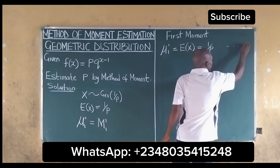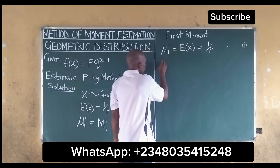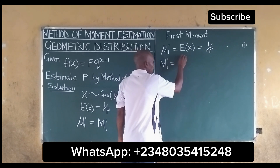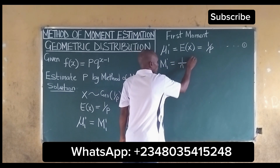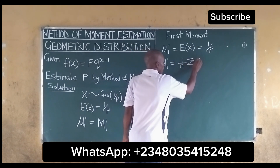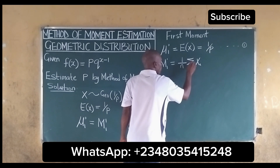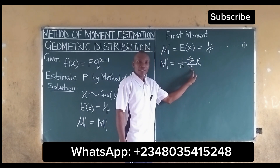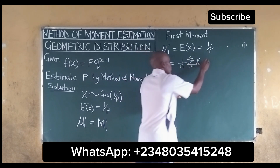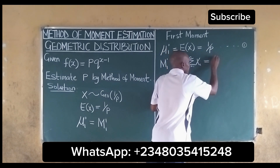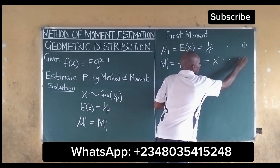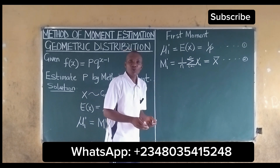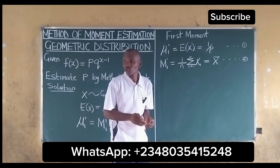We take this as our equation one. Also, the sample mean is given as 1 over n, summation of x_i as i running from one to n, and we know that this is equal to x-bar. We take this as our equation two.